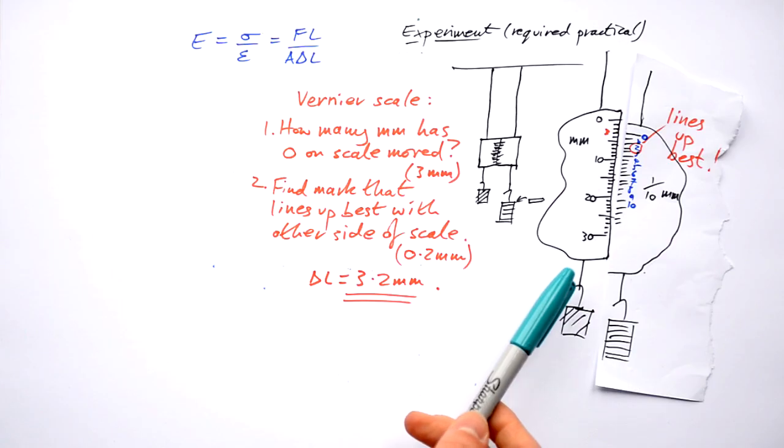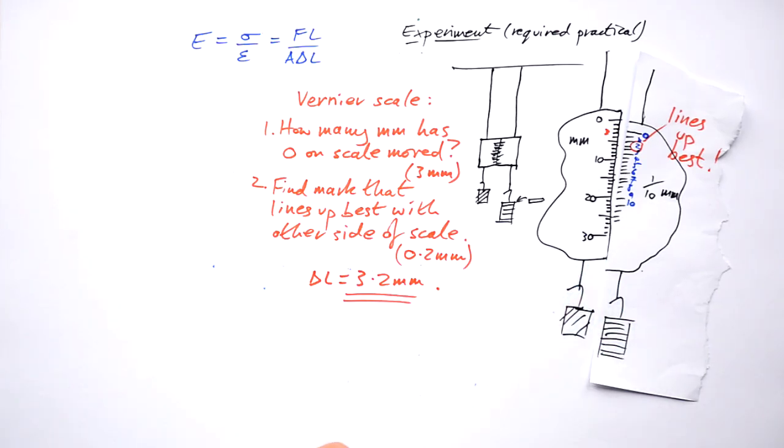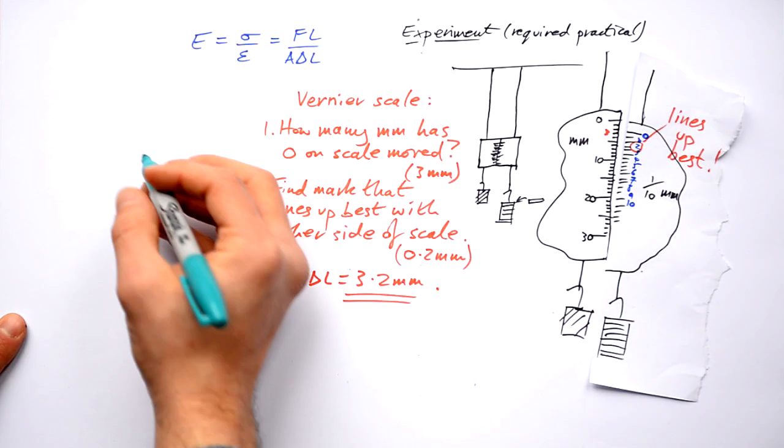By the way, having this reference wire here is useful because if there are any changes to temperature and that results in expansion, then it's going to happen to both of the wires.